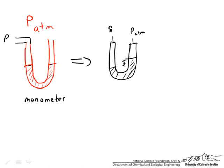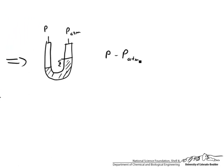And so we can just write that P minus P_atm is equal to ρgh where our h is here. So that is how a manometer basically works. And then we can have added layers of complexity.